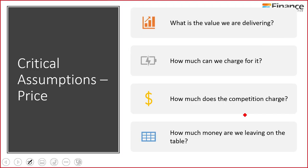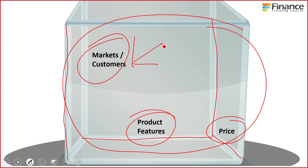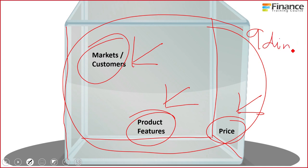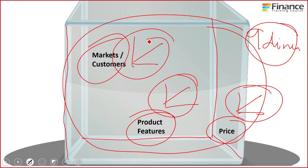The third part is price: what is the value we're delivering, how much can we charge for it, how much does the competition charge, how much money are we leaving on the table? Within these three dimensions — markets and customers, products and features, and price — each is itself three-dimensional. So you're not looking at a three-dimensional grid; you're actually solving a problem with nine dimensions, one sub-dimension at a time.